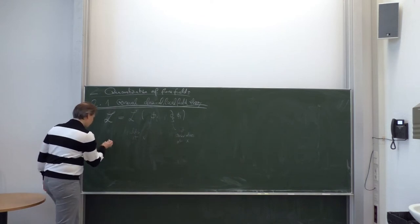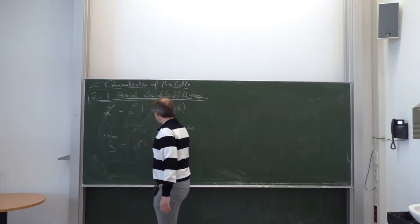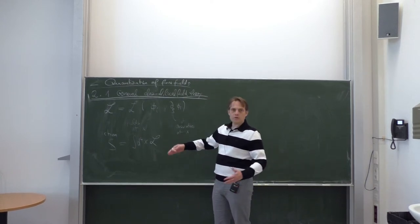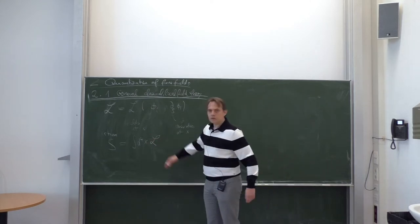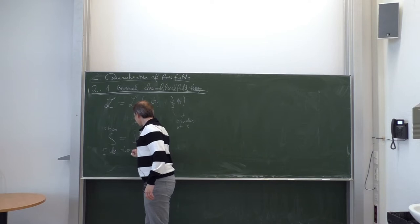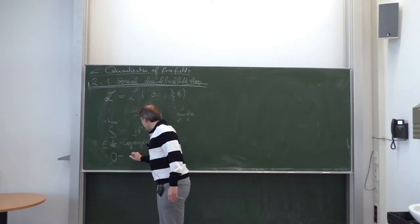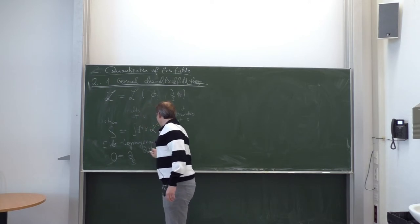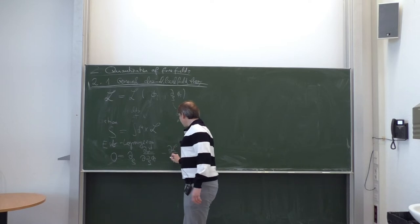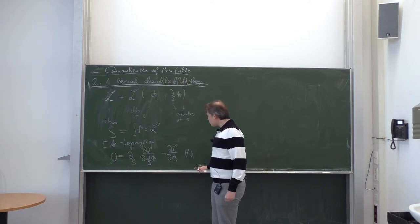We can define an action S as the d⁴x integral over the Lagrangian density. Then we can apply the principle of least action and require that our field configurations extremalize the action. This gives us the Euler-Lagrange equations for the field theory: 0 = d_rho of (dL/d(d_rho phi_i)) minus dL/d(phi_i).